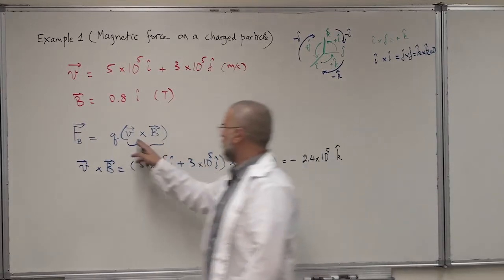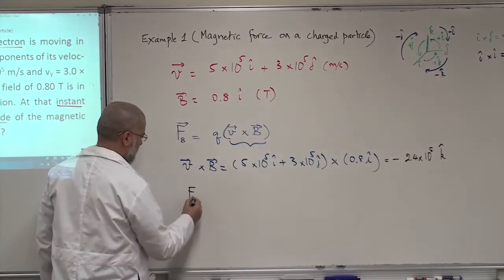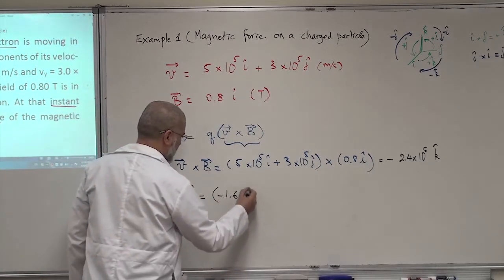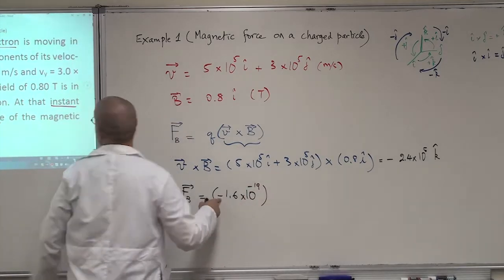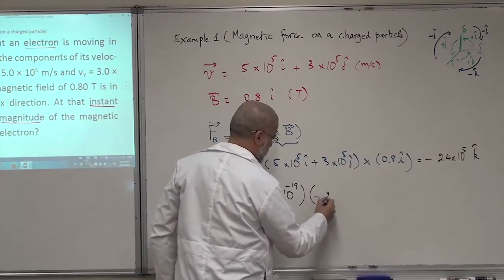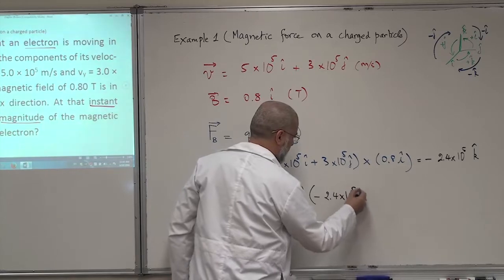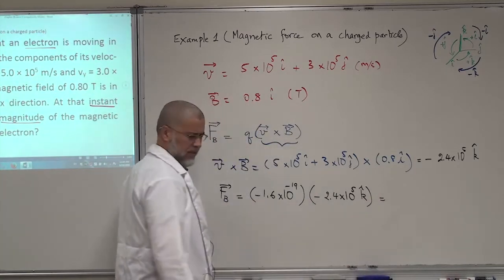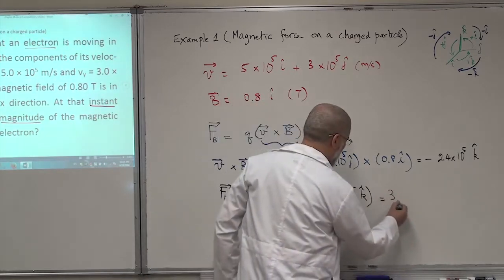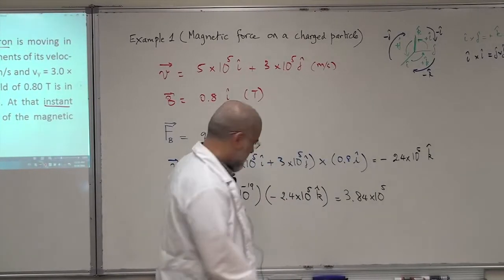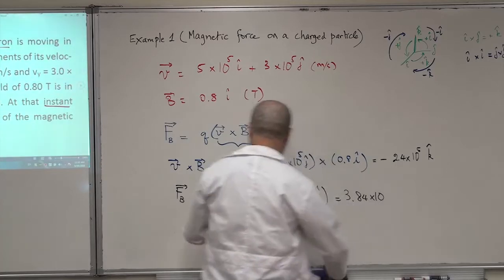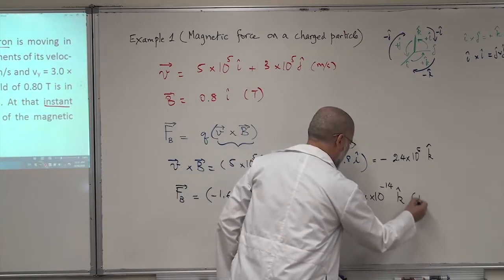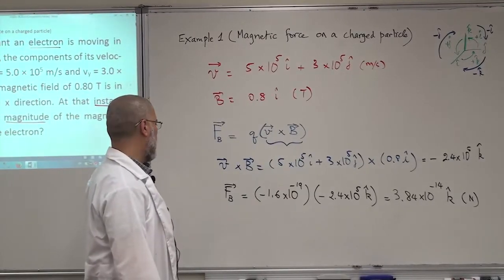This is the answer for V cross B. Now let's calculate the force FB. FB is Q — the charge of the electron, which is minus 1.6×10⁻¹⁹ — you have to put the sign of the charge because the electron has a negative charge. Times minus 2.4×10⁵ K. The minus times minus gives you a plus, and the answer will be 3.84×10⁻¹⁴ K Newtons — those are the units for the magnetic force.